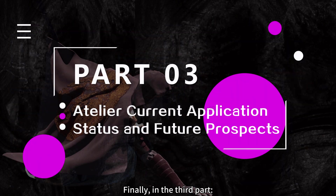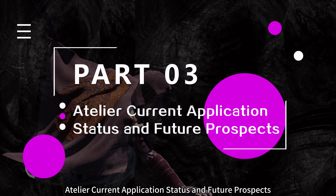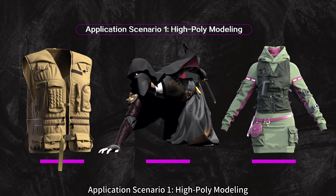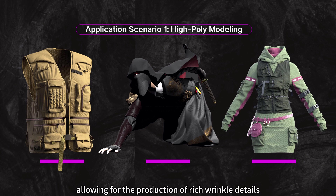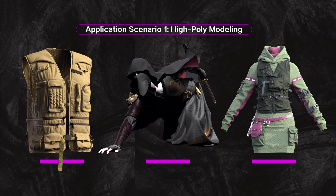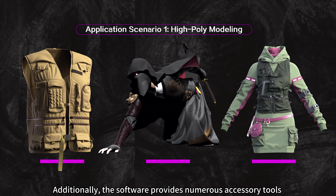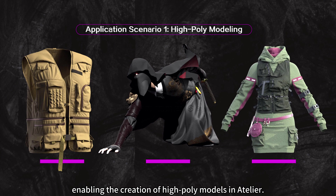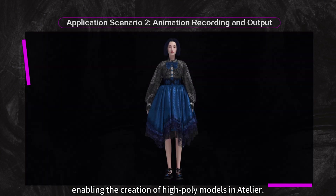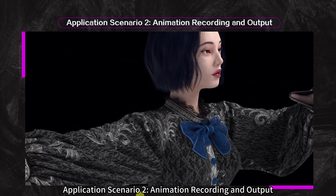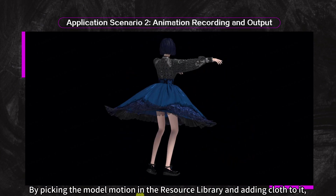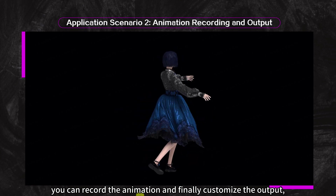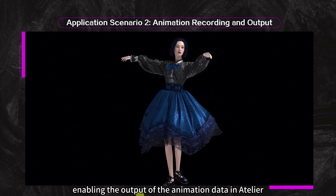Part 3: Atelier Current Application Status and Future Prospects. Application Scenario 1 – High Poly Modeling: Atelier's proprietary engine supports high face-count cloth, allowing for rich wrinkle details. The software provides numerous accessory tools for quickly adding details such as buttons, zippers, and labels, enabling the creation of high-poly models. Application Scenario 2 – Animation Recording and Output: By picking the model motion in the resource library and adding cloth to it, you can record the animation and customize the output, enabling animation data output in Atelier.